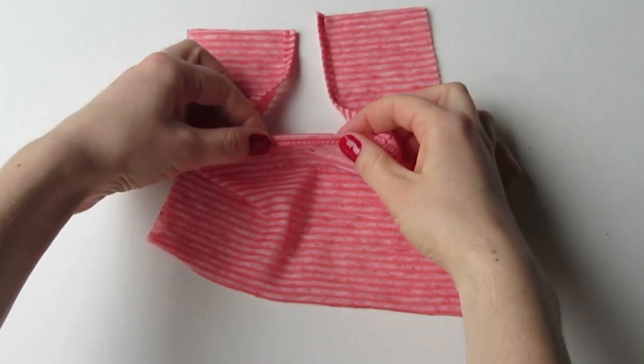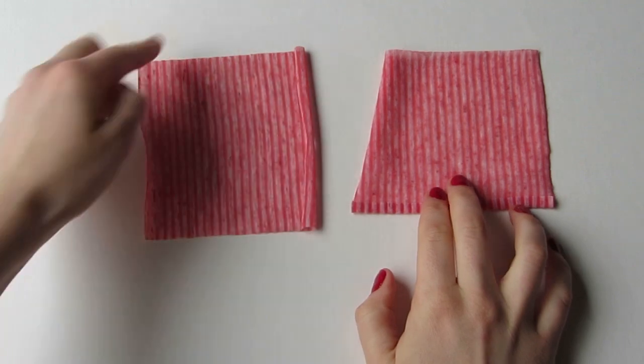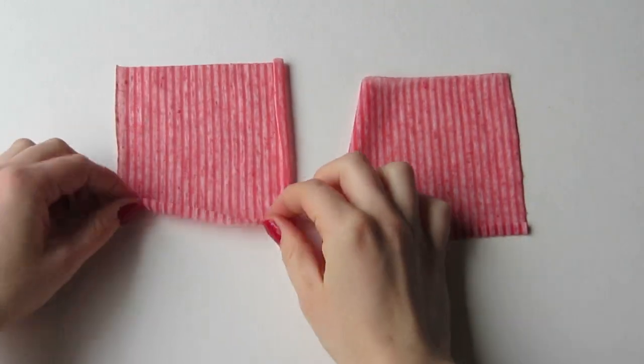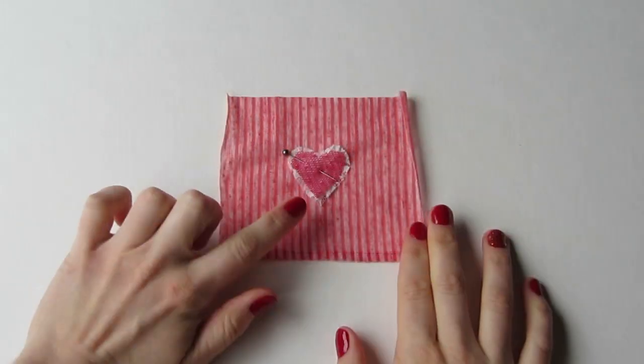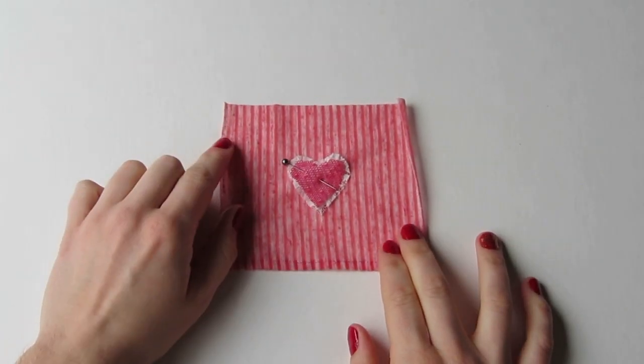Hem one edge of the sleeve squares again by folding up a quarter inch twice, pressing, and then top stitching. If you want to add the heart applique, now is the time to pin it down and then just stitch around the outside to hold it in place.